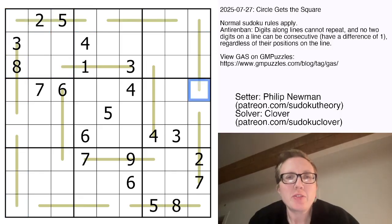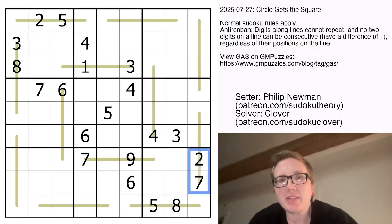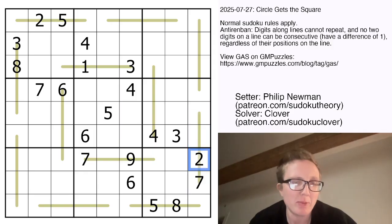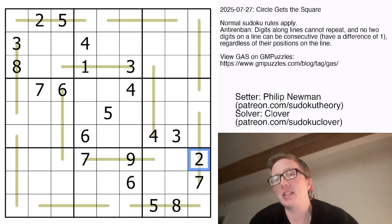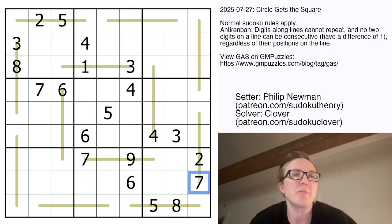Also, there are these greenish-goldish colored lines in the grid, and along each of these lines, there cannot be any pairs of digits that are consecutive anywhere on the line. So for example, because there is a 2 right here, there can't be a 1 or a 3 anywhere else on the line. Because there's a 7 there, there can't be a 6 or an 8 anywhere else on the line. So it probably makes sense that this is quite restrictive.